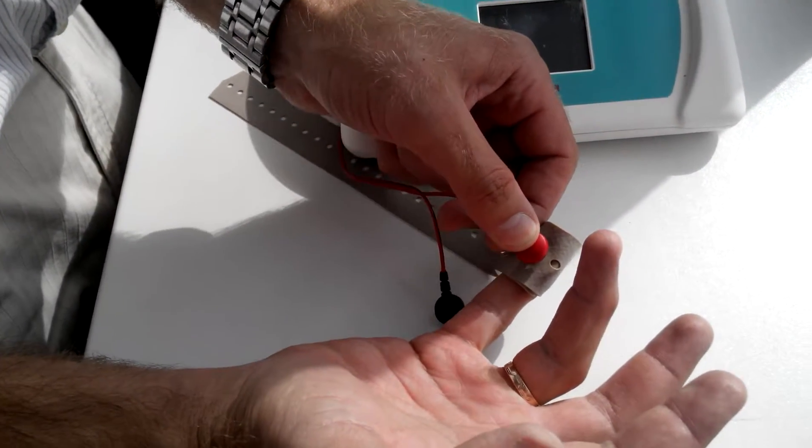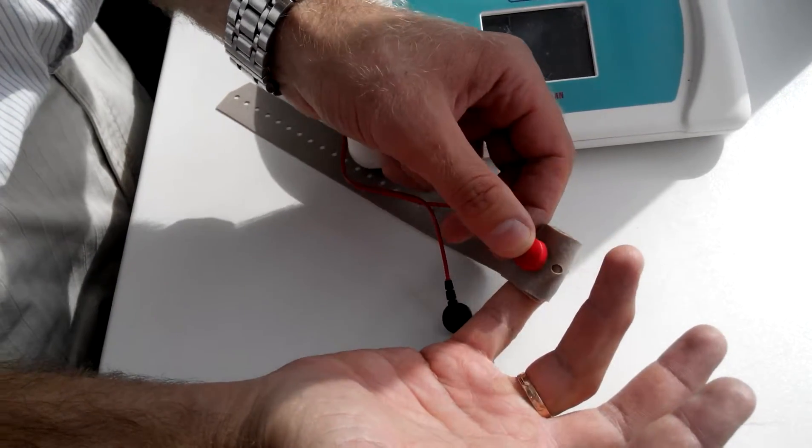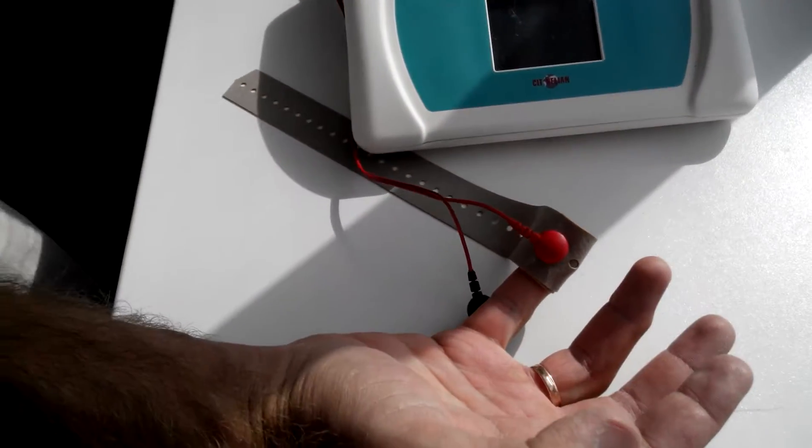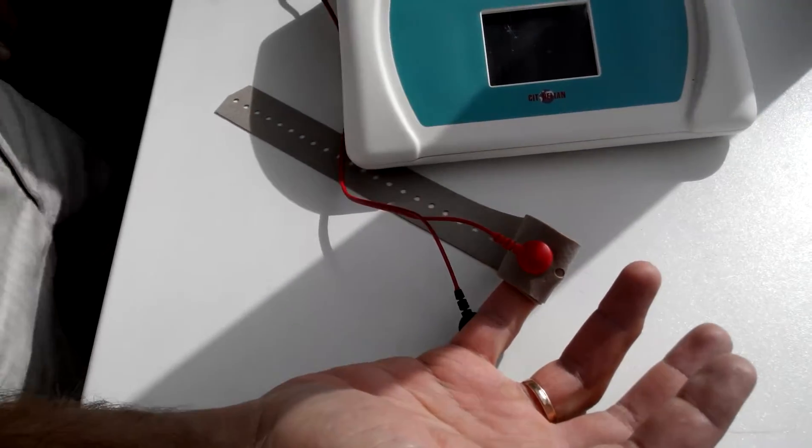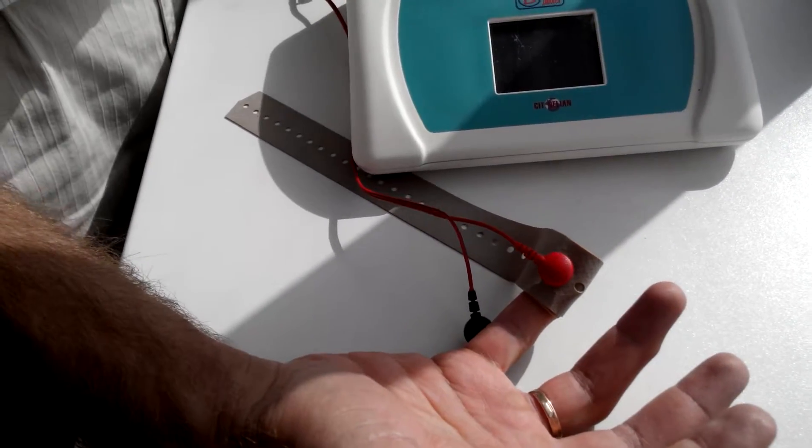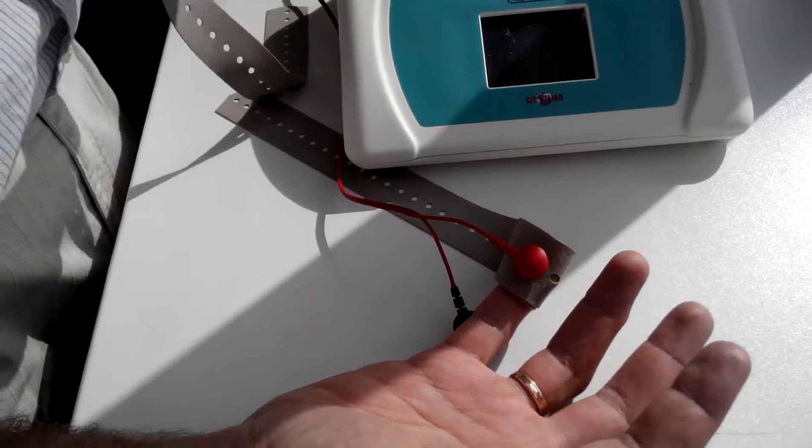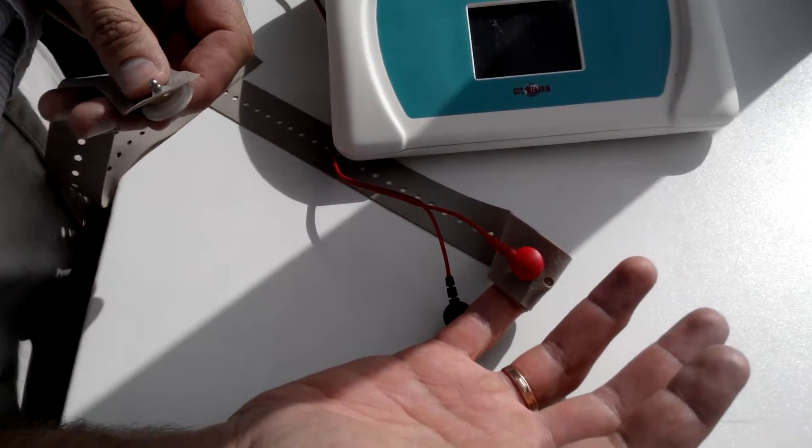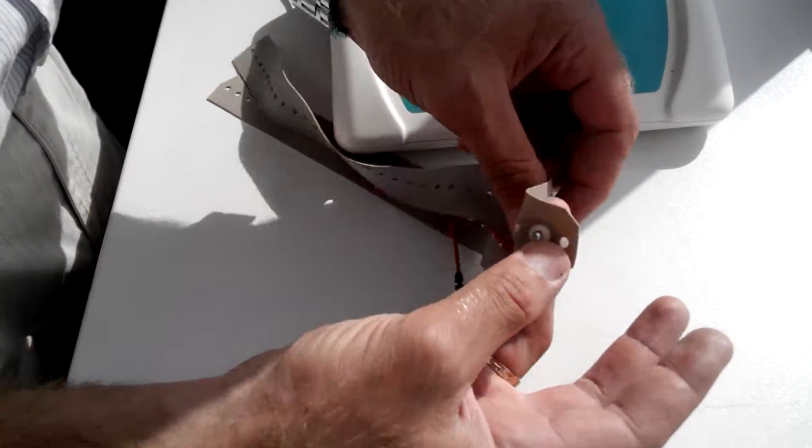We can use a special gel between the finger and the electrode to make the contact better. Then we just clip the electric cable snap on the electrode, and we can do it with another finger.